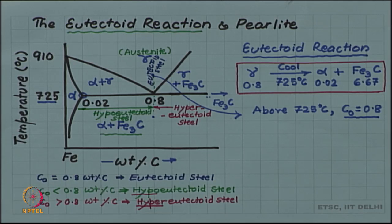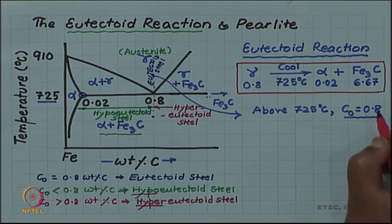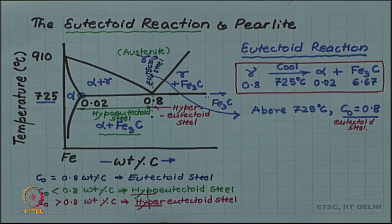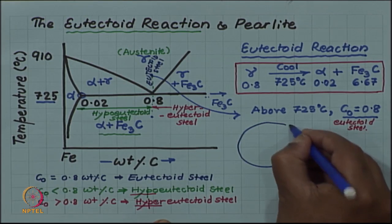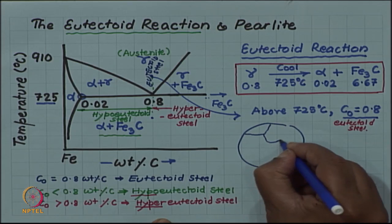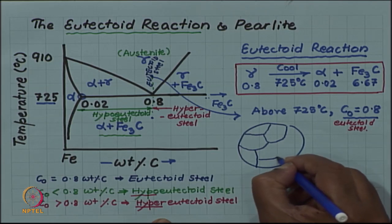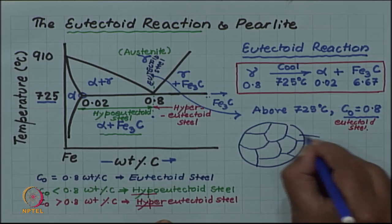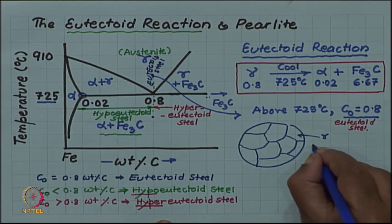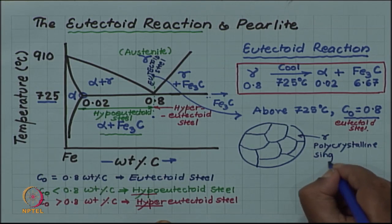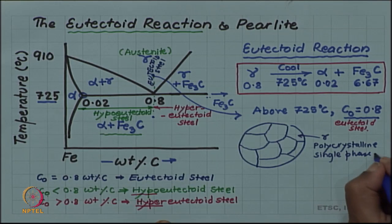That is the nomenclature. We are currently considering the eutectoid steel, that is 0.8 weight percent carbon. If I look at the microstructure above 725°C, I should have a single-phase gamma. Although it is single phase, it need not be single crystal — there may be many differently oriented crystals giving what we call grains and grain boundaries. All grains are gamma, but it is polycrystalline: polycrystalline single-phase austenite gamma.